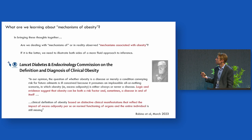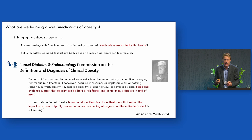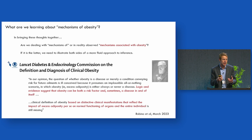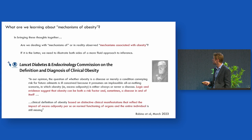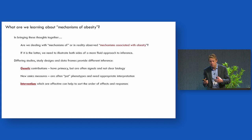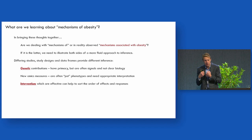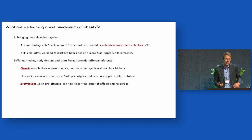To wrap this up: are we really dealing with mechanisms of, or are we just observing mechanisms associated with, and how do we unpick that? What tools do we have to try and understand directions of effect? There is a commission coming together right now trying to bring this way of thinking into the clinical definitions of obesity — a more fluid understanding, bringing in the consideration that there are multiple things feeding in and feeding out of a clinically important state. Different types of study design can offer data frames and insight, but require inference. There is a theoretical element of primacy to genetics, but of course they're not simple — they're signals, and we need to interpret them.